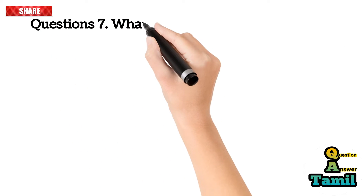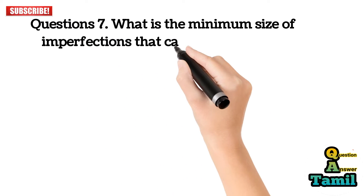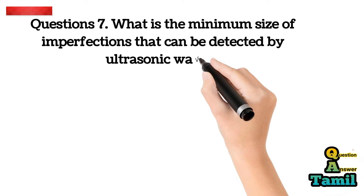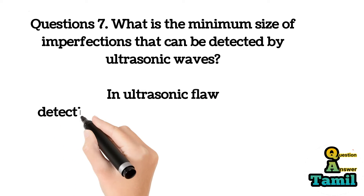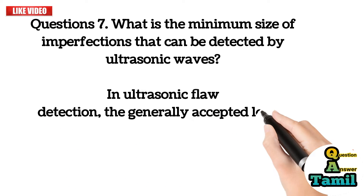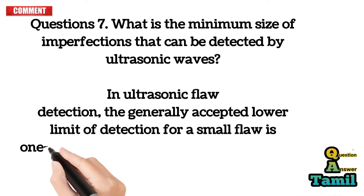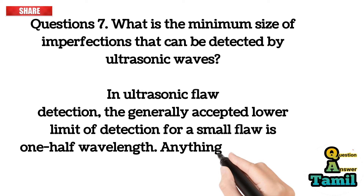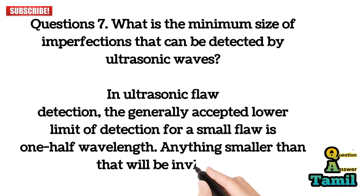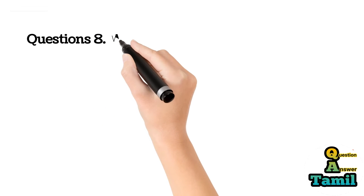Question 7: What is the minimum size of imperfections that can be detected by ultrasonic waves? In ultrasonic flaw detection, the generally accepted lower limit of detection for a small flaw is one-half wavelength. Anything smaller than that will be invisible.